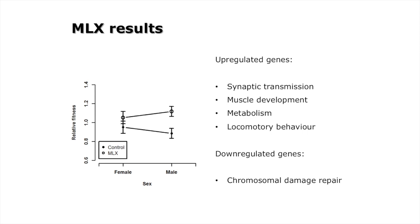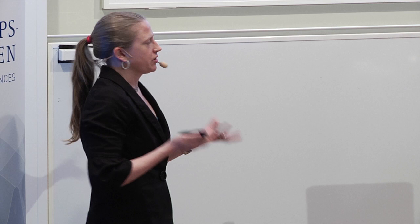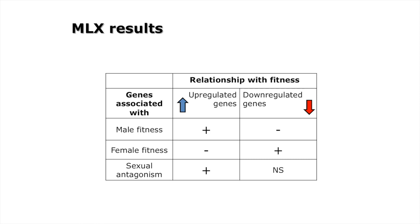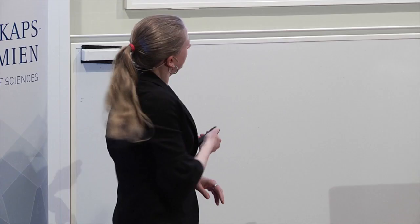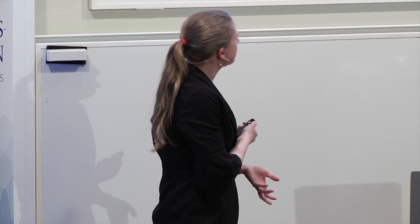We also looked at gene expression and saw interesting patterns. Metabolism and locomotory behavior were upregulated in the evolved lines, and when we checked the locomotory behavior of these flies we could see that females had increased their locomotion until they were as active as males. Chromosomal damage repair seemed to be less important for the males. When we looked at genes that had changed in expression and compared with previous data, the upregulated genes were things previously known to be good for males and bad for females — sexually antagonistic — and these were overrepresented among the upregulated genes. The downregulated genes were those that were bad for males and good for females.